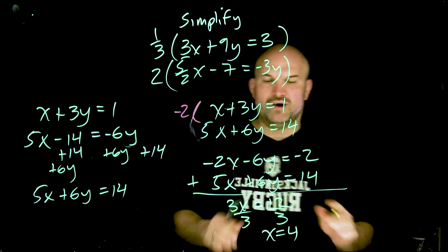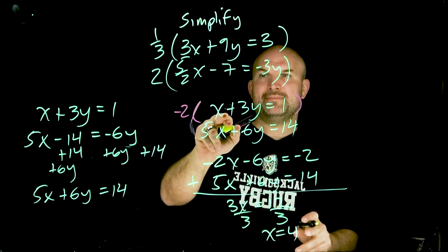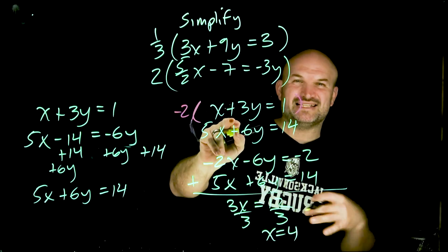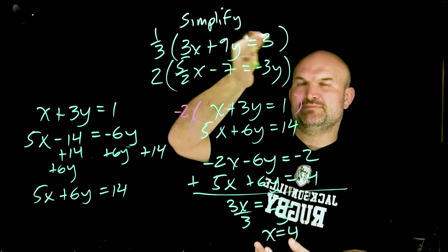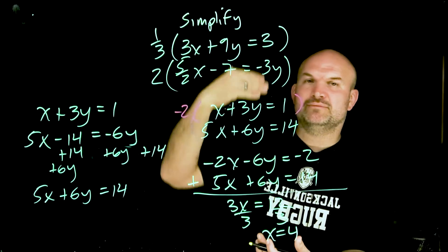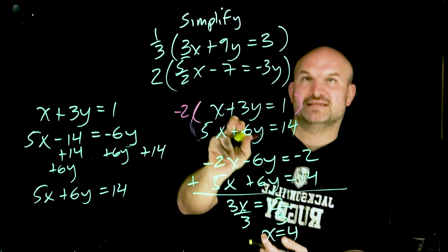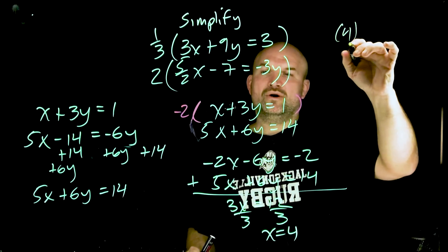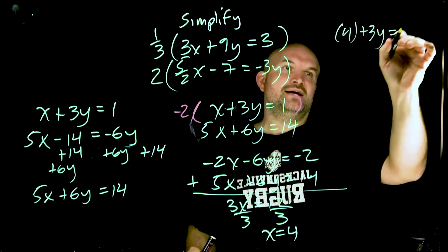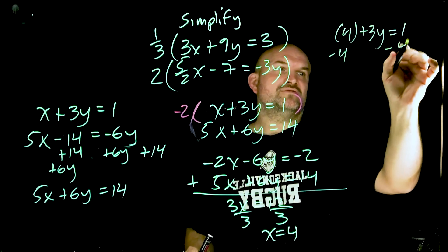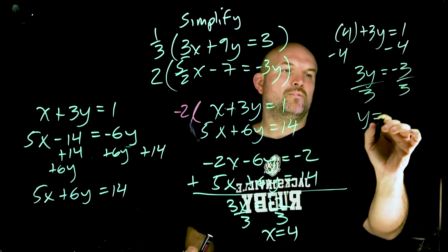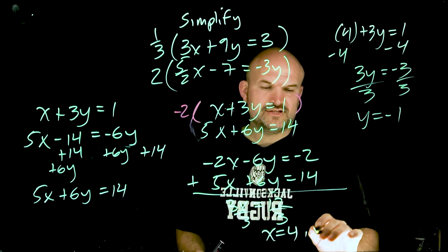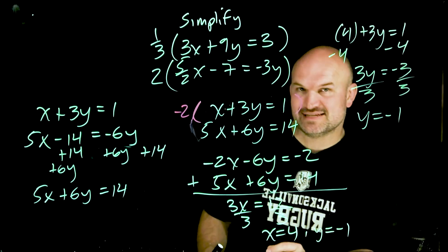And then if I want to be able to solve for y, I can just plug 4 into this top equation. Don't really want to use these. I want to use that simplified equation. That's why simplifying can be so helpful. Because even though this wouldn't be that difficult, if you have it in the most simplified form, it's just going to make the math a lot easier. So I plug in 4 in for x plus 3y = 1, subtract 4, 3y = -3, divide by 3, divide by 3, y = -1. So that is going to be my solution for that system.